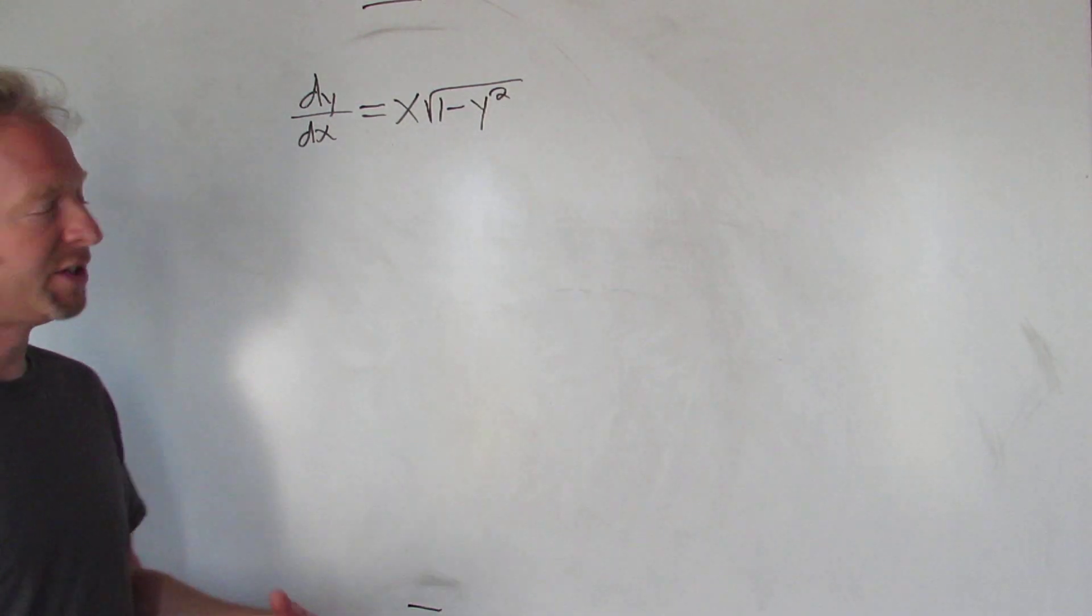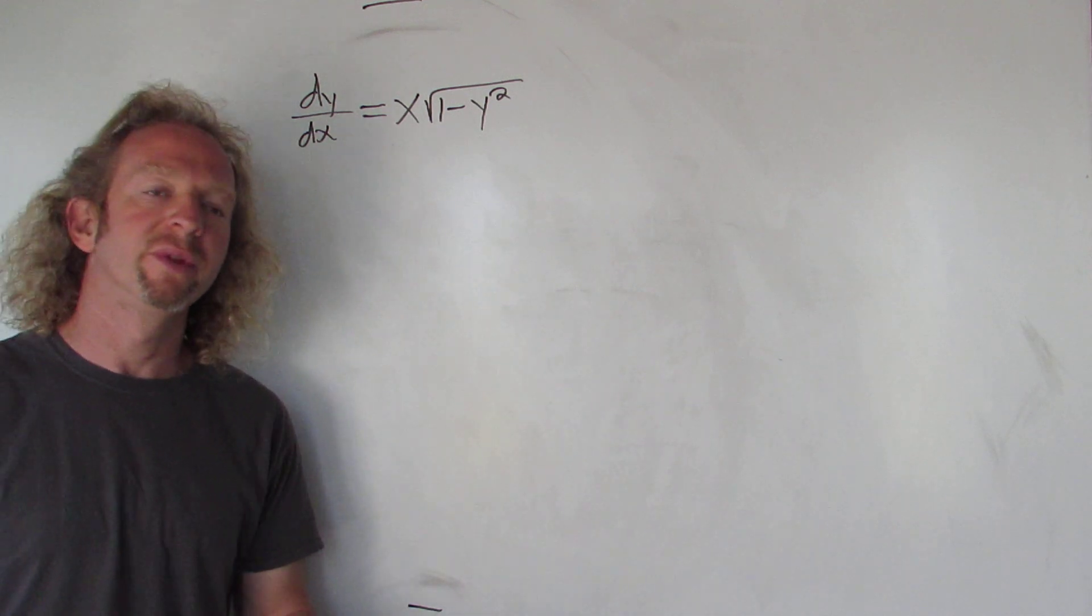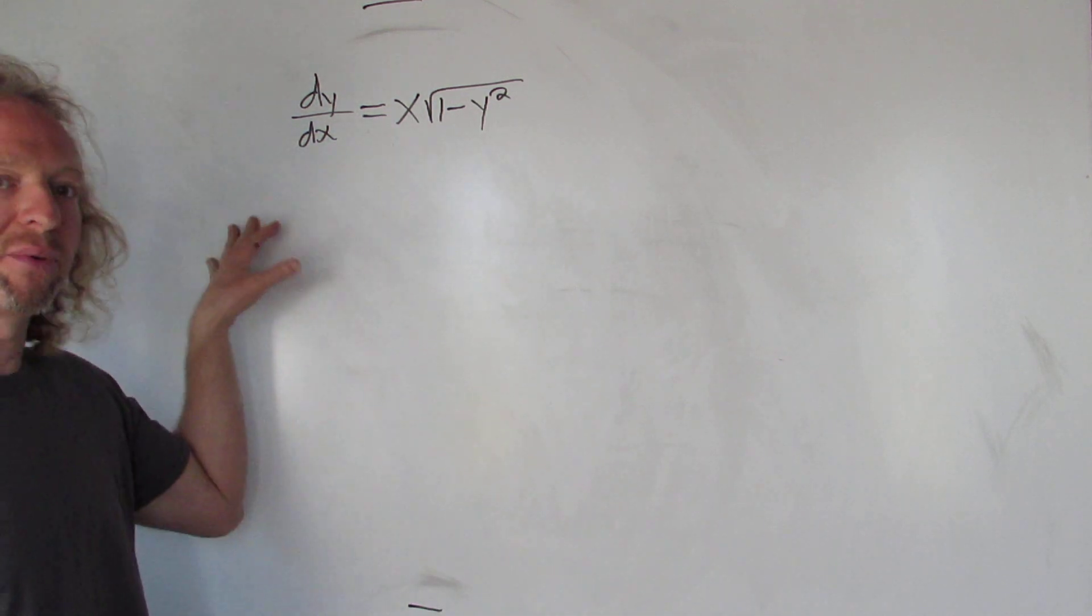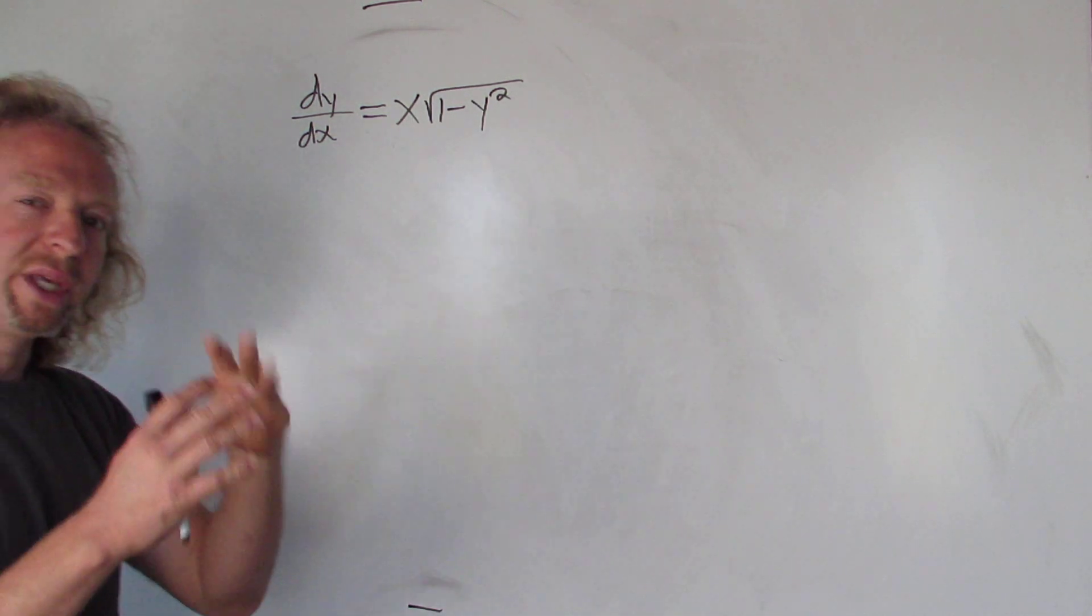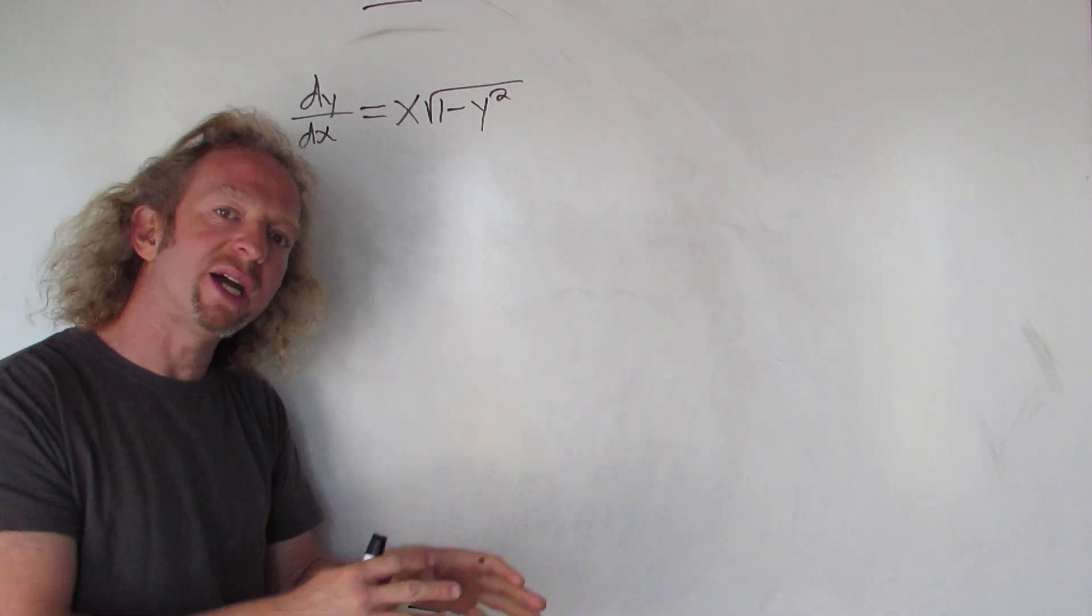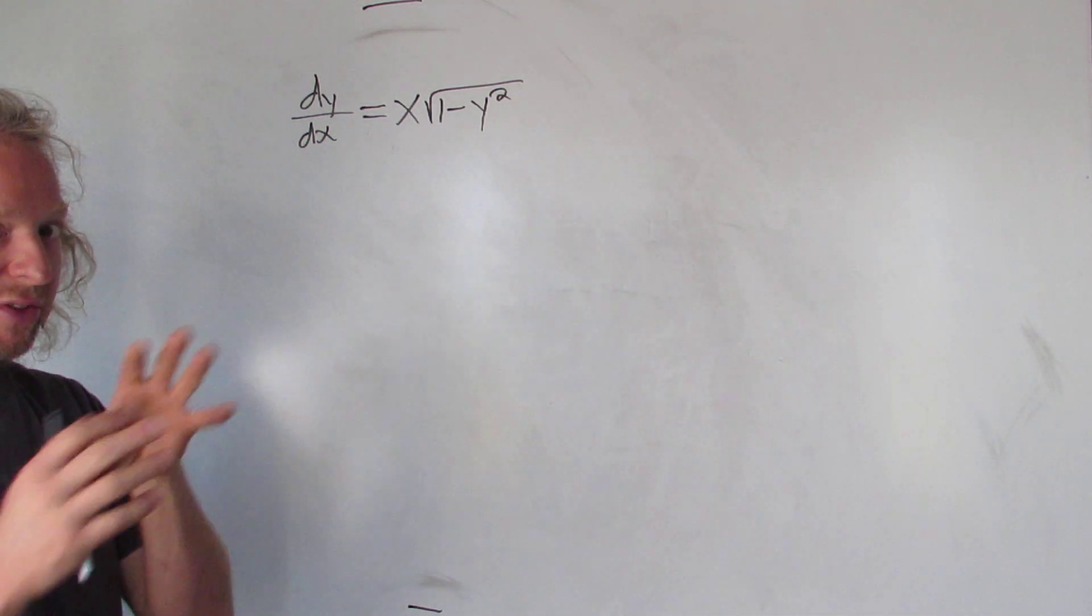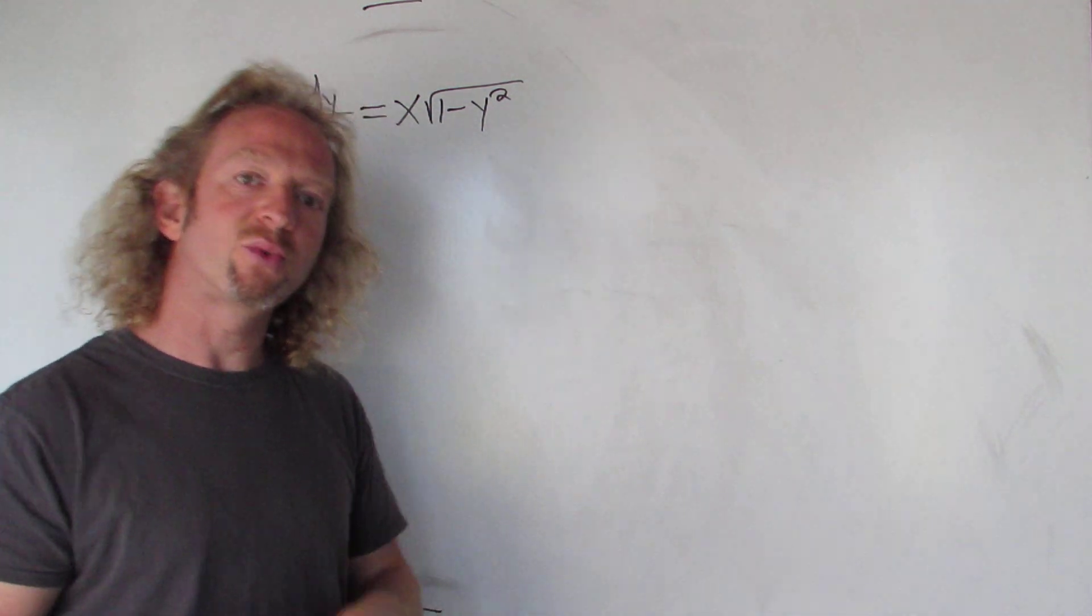Hey, what's up? So in this problem we have a differential equation and we're going to solve it. It looks like we can separate it. What that means is we can get all of the x's with the dx on one side and all of the y's with the dy on the other side. Differential equations where you can do that are called separable differential equations.